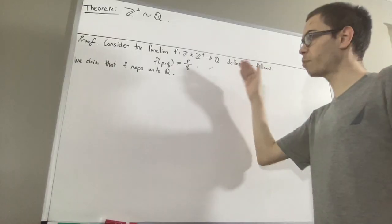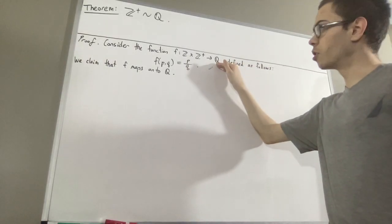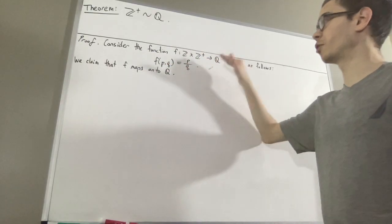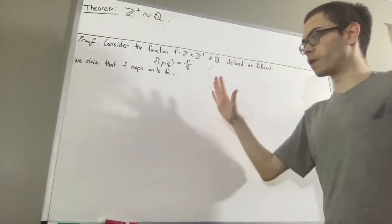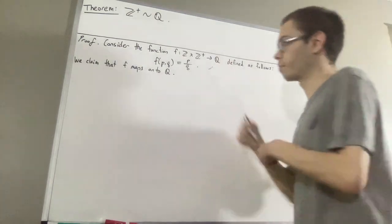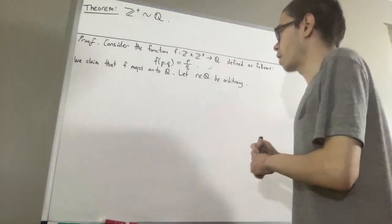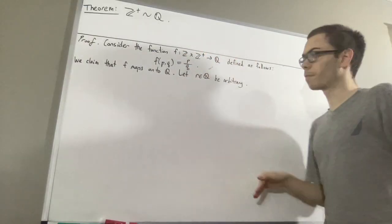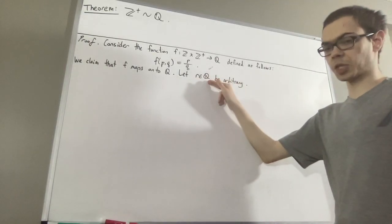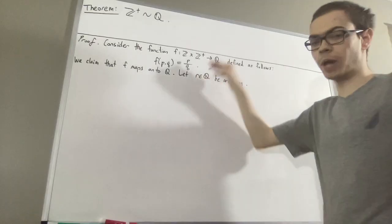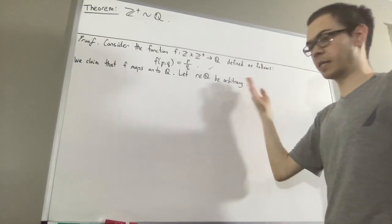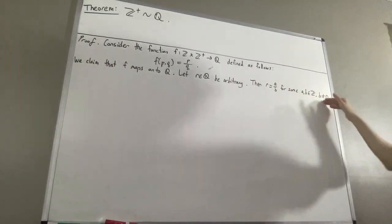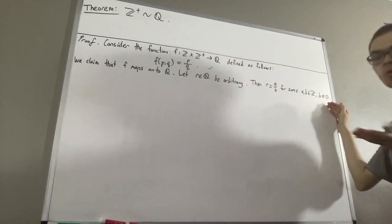To prove that, we want to show that for every rational number r, there exists an ordered pair in the domain such that f sends it to r. Let r be an arbitrary rational number. Since r is a rational number, by definition r equals a over b where a and b are integers and b is not equal to zero. Since b is not zero, either b is greater than zero or b is less than zero.